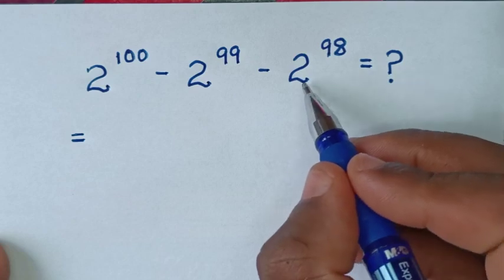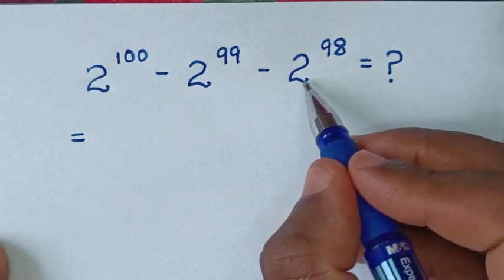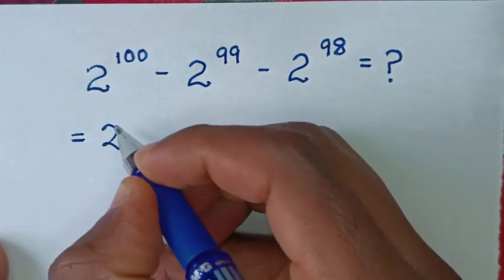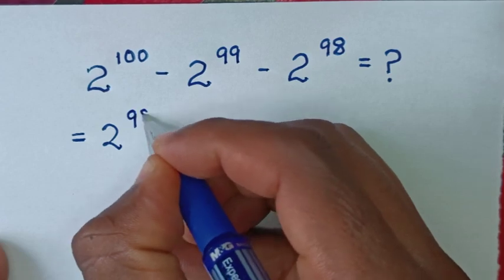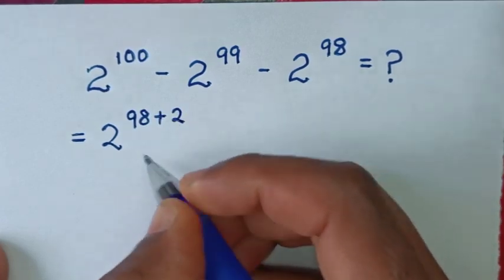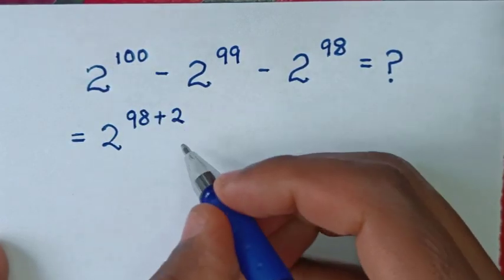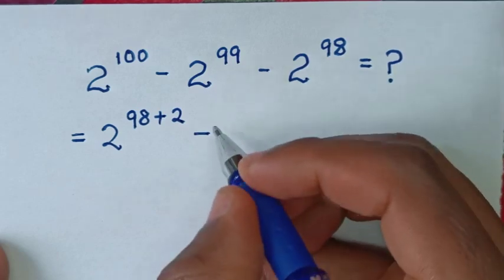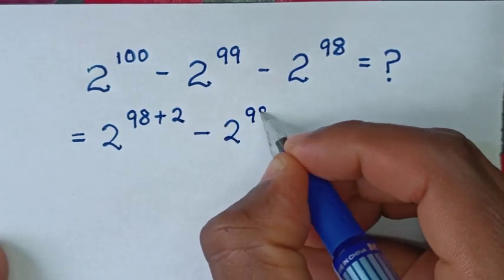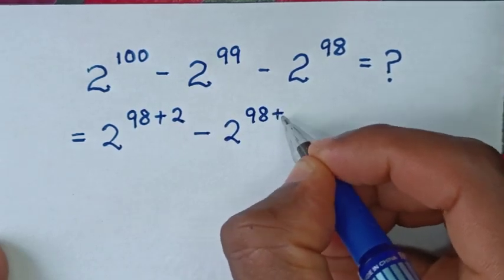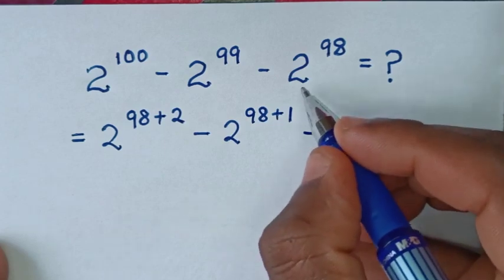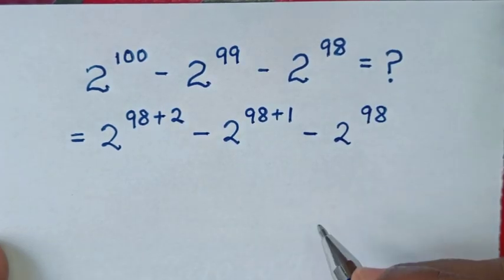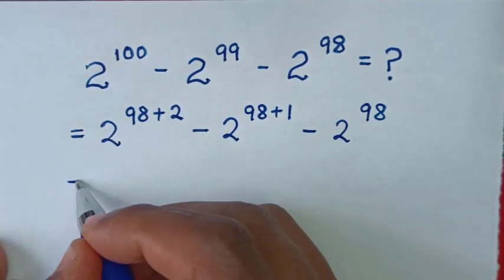So we make 2 power of 98 the common factor. Now, 2 power of 100 is the same as 2 power of 98 plus 2, because 98 plus 2 gives the power of 100. Then minus 2 power of 99, which is the same as 2 power of 98 plus 1. Then minus 2 power of 98.